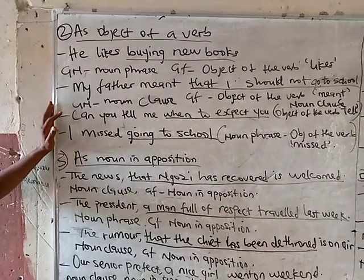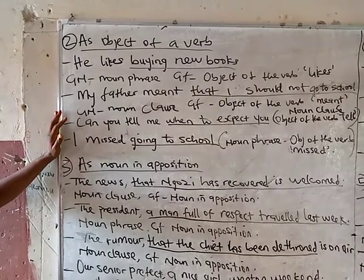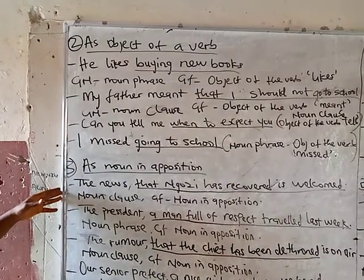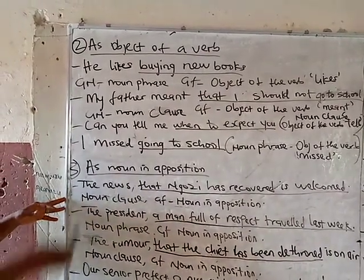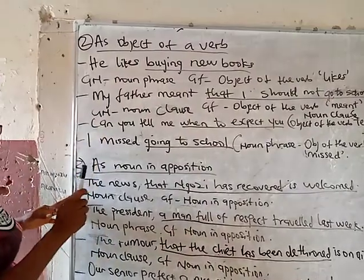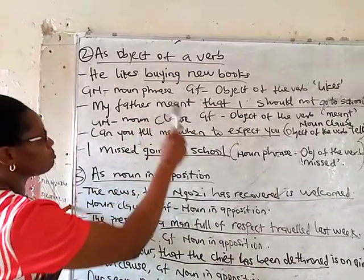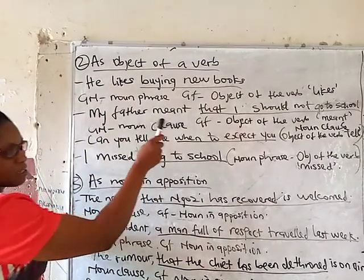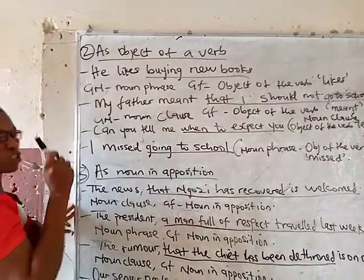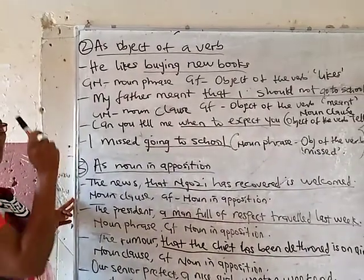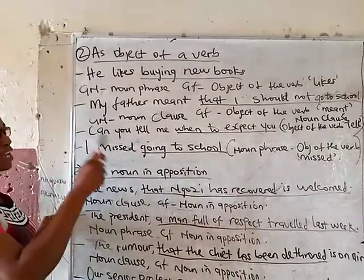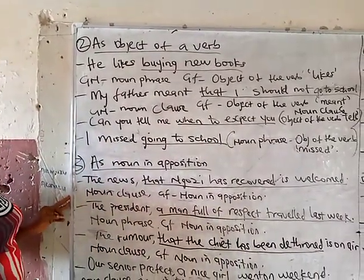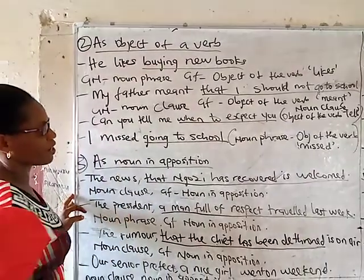Another grammatical function of a noun phrase or clause is that it can act as the object of a verb. For instance: 'he likes buying new books.' Immediately after the verb 'likes' you get 'buying new books', which is a phrase that is the object of the verb 'likes'. Remember, the subject comes before the verb, but the object must come after the verb. The grammatical name is noun phrase; the grammatical function is object of the verb 'likes'.